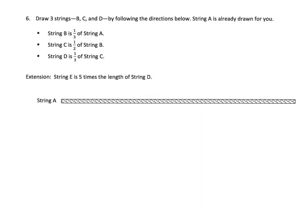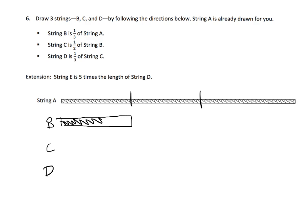And the last slide for this video says draw three strings b, c, and d — so we already have string a. Now we're going to do b, c, and d by following these directions, so let's label this b, c, and d — there's our strings, that's where we're going to draw our strings. Now it says string b is one-third of string a. So that means we need to take string a and cut it up into three equal sized pieces, and that is how long string b is.